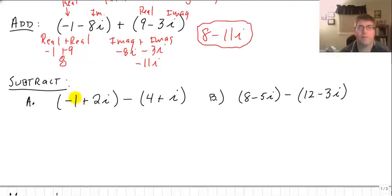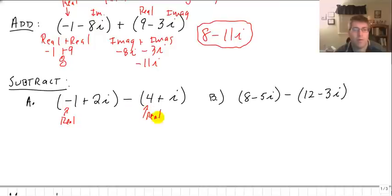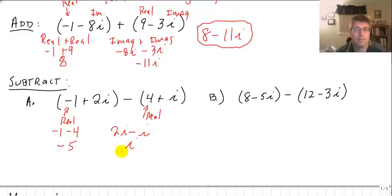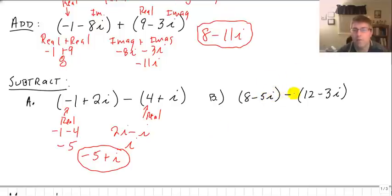When we subtract, we do the same thing — subtraction is adding the opposite. We take our real parts and subtract those. Our real parts are negative 1 minus 4, which is negative 5, and our imaginary parts are 2i minus i, which is i. So our final answer is negative 5 plus i. I'm going to leave sample b for you to do on your own — remember that minus sign is fraught with peril; you'll have to apply it to that 3i when you add your imaginary portions.